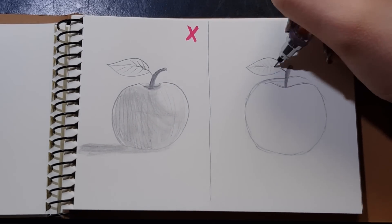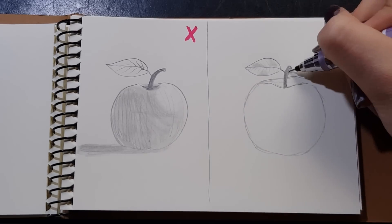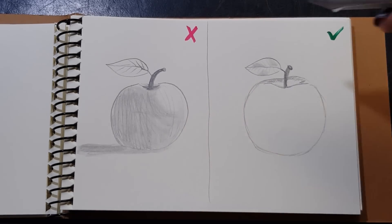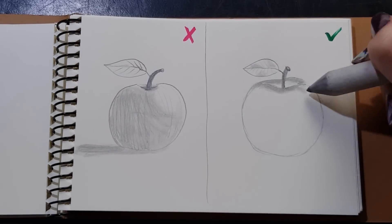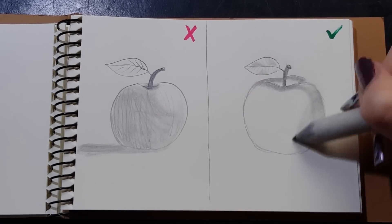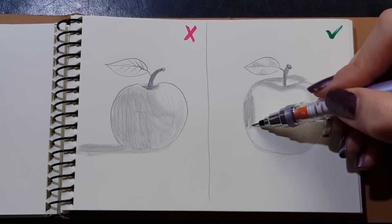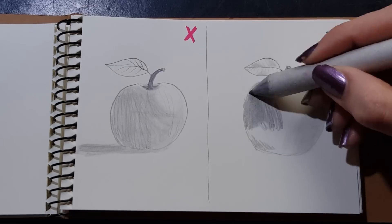So the first drawing is going to be how to draw an apple. This is just really basic shading technique as you can see. You just really have to blend, blend, and blend. Blending is really important when you want to create a realistic drawing.